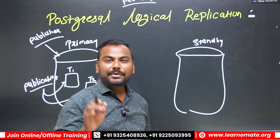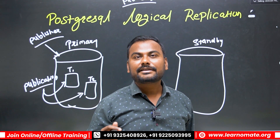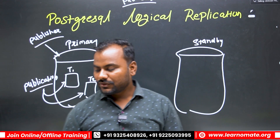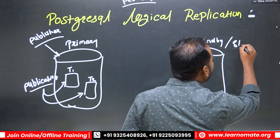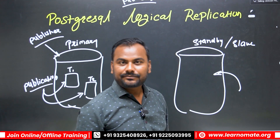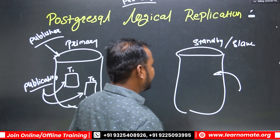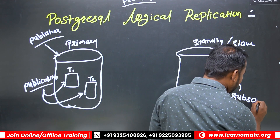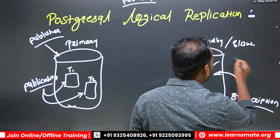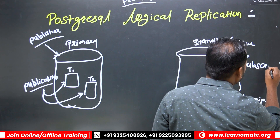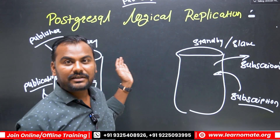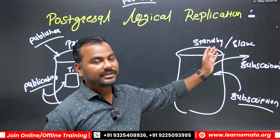I want to replicate these two tables from primary to standby. On the standby side — which is my slave machine, and you can have multiple slave machines — we are going to create a subscription. This standby node is called the subscriber. The publisher is on the primary/master side, and the subscriber is on the standby/slave side.